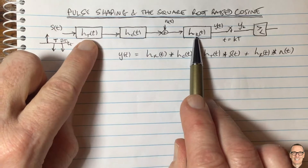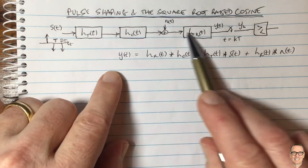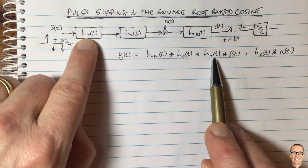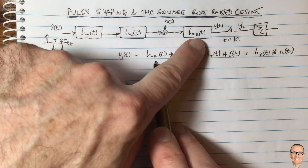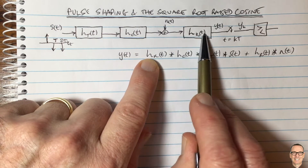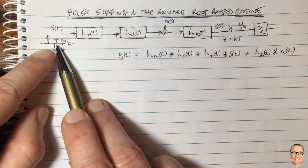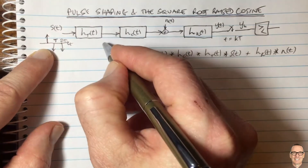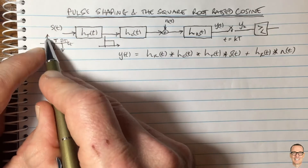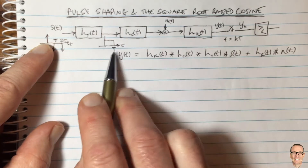The channel is given to us by nature and physics, and the engineering job is to design the transmit filter and the receive filter. It's all a linear system, so the input signal is convolved with the transmit filter, convolved with the channel, convolved with the receive filter. The noise goes through the receive filter. Why do we need these filters? Because you can't just send a one or zero — you have to send a waveform.